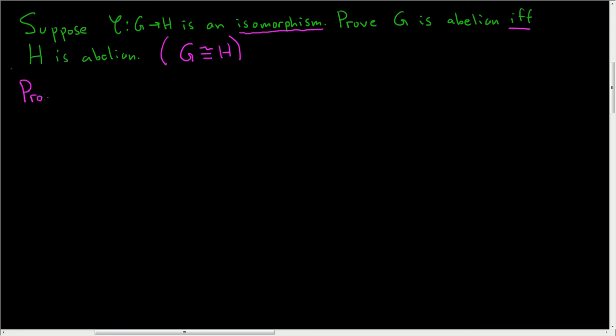Proof. So I'll say a lot of words and I won't write a lot down. So suppose it's an isomorphism and we'll start by assuming G is abelian. So suppose G is abelian and we want to prove that H is abelian. So claim: H is abelian.